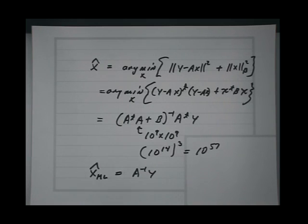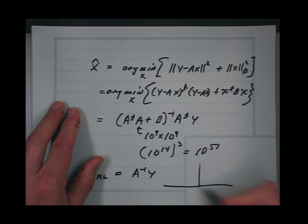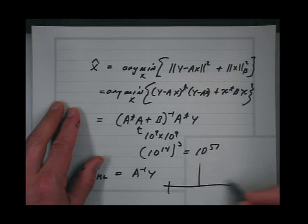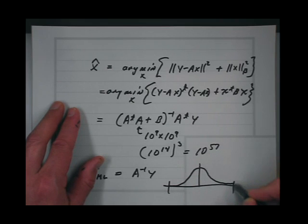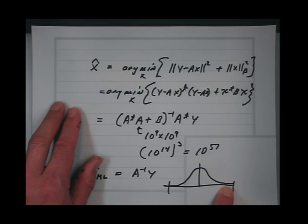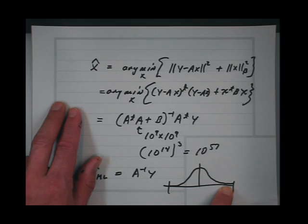If you have a filter and theoretically you can divide by some incredibly small number in the stop band to re-equalize and recover the signal — but if there's any noise, the noise is going to be amplified like crazy and you're just going to get junk.